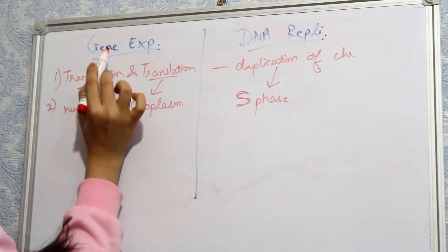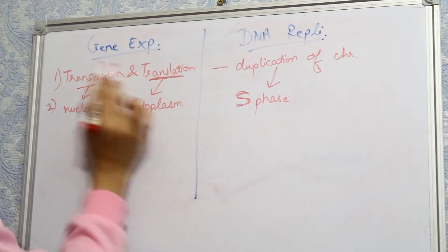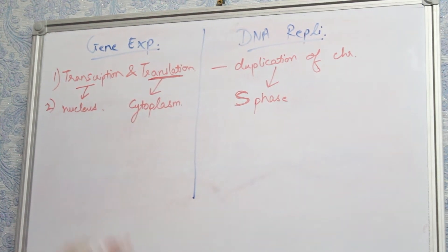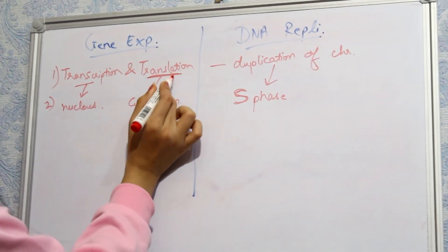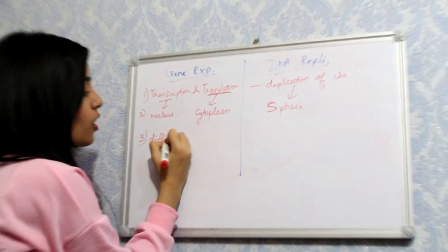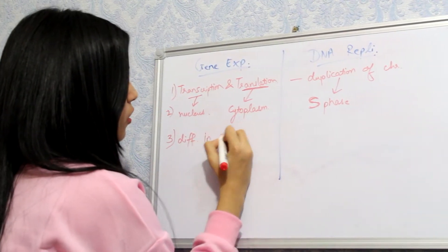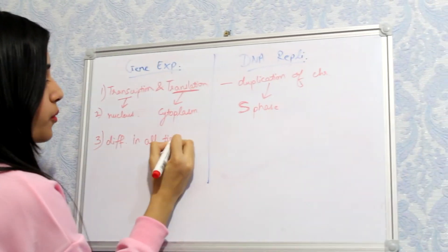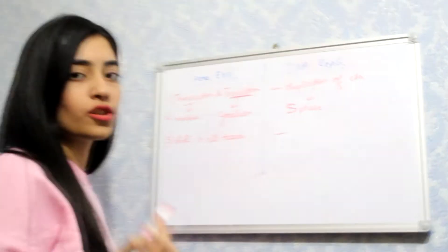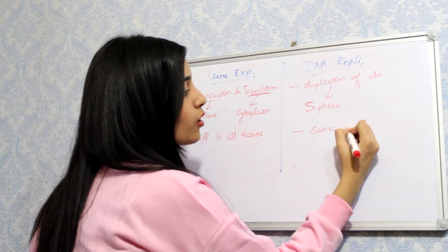The end result of gene expression will be protein, because translation is the final stage of gene expression — it means the conversion of RNA into protein. Gene expression will be different in all tissues because all tissues need different proteins. But DNA replication has to be the same in all tissues, as it is just the duplication of chromosomes.